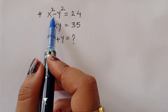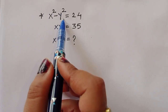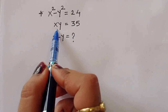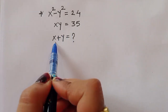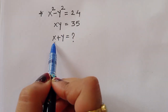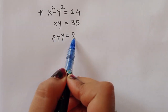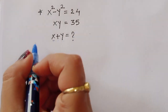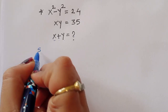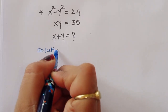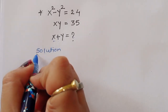Given x squared minus y squared is equal to 24 and xy is equal to 35, we have to find out the value of x plus y. Let's see the solution — how we can find out this value.